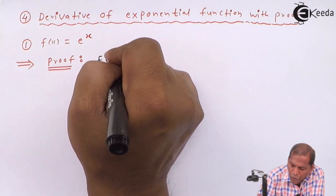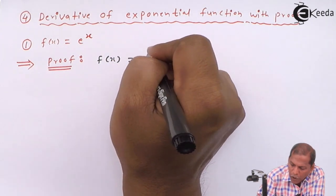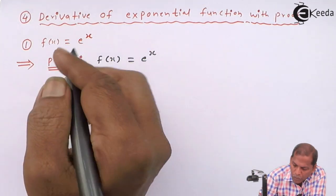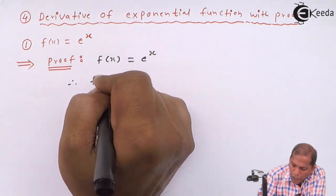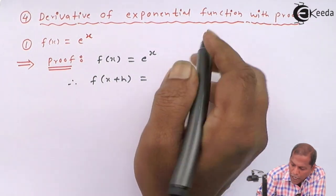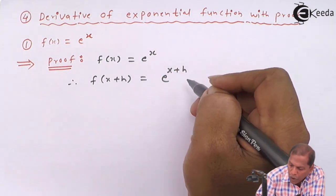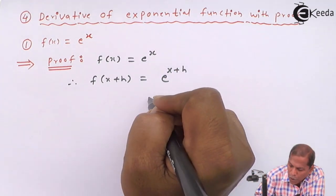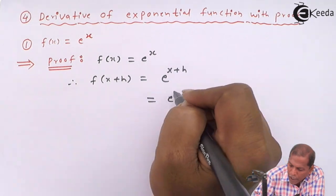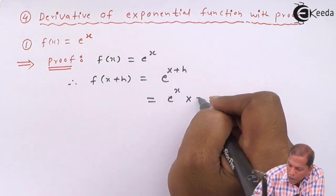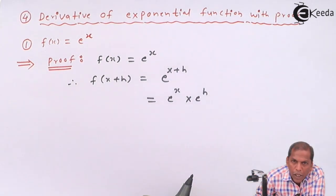We start with f of x is equal to e raise x. Therefore f of x plus h, so that gives e raise x plus h. By using indices rule, that can be written as e raise x into e raise h.